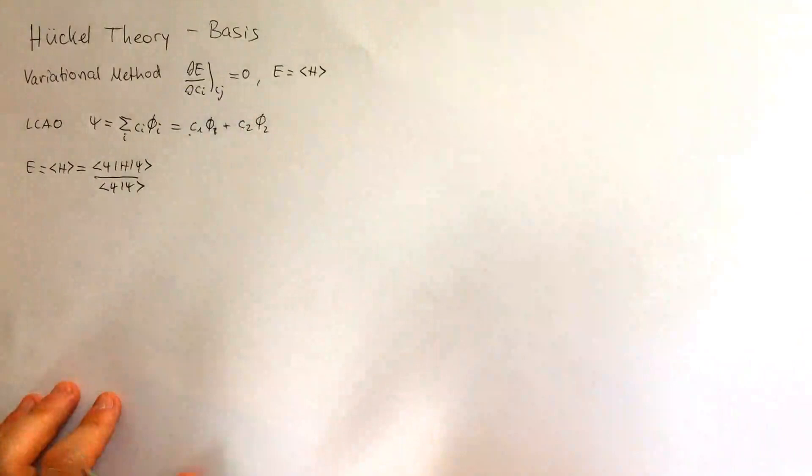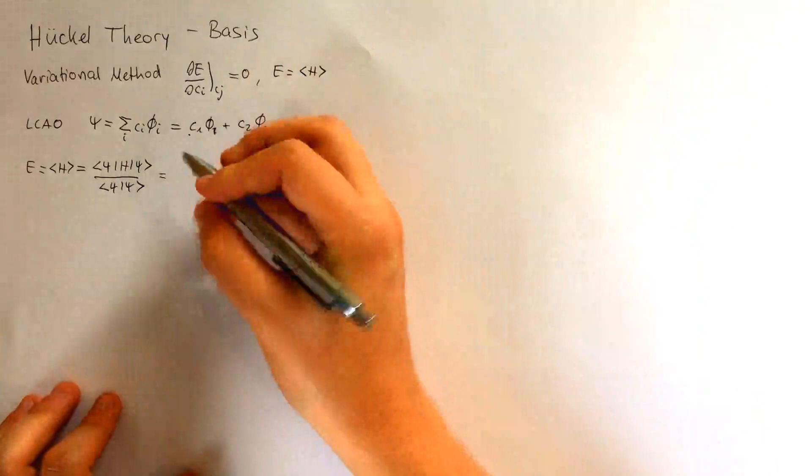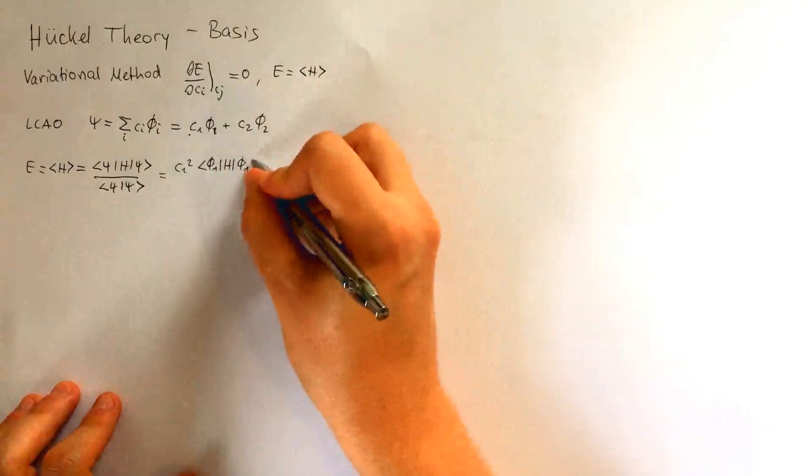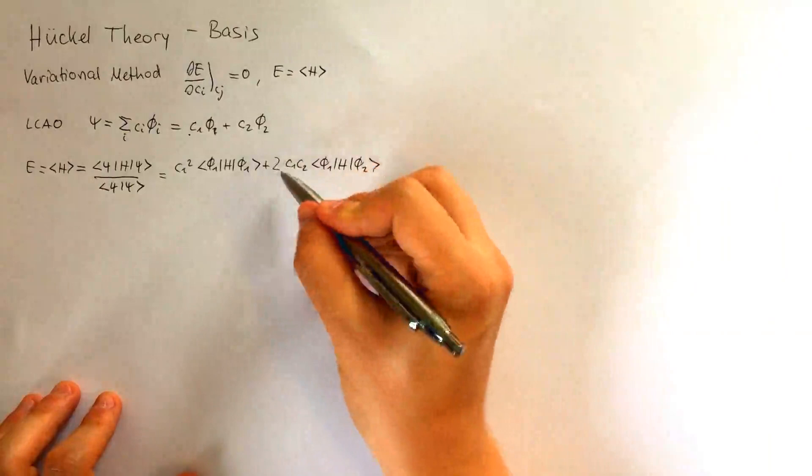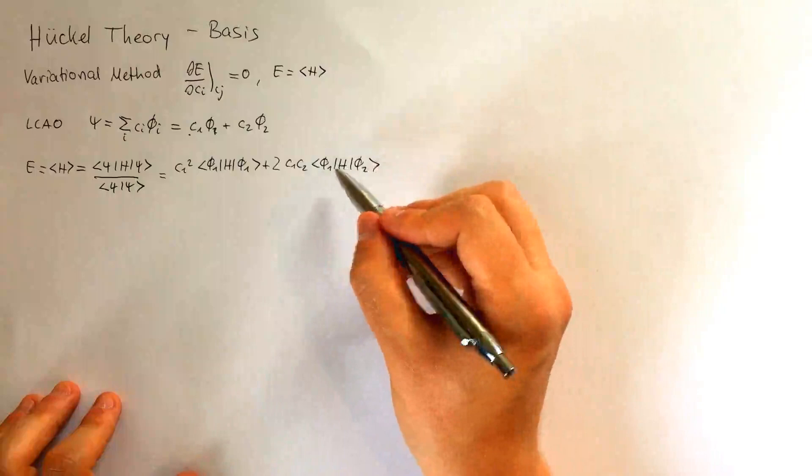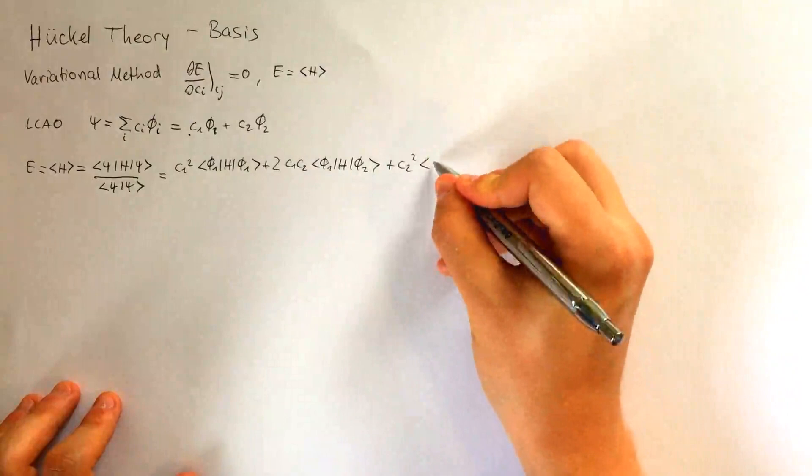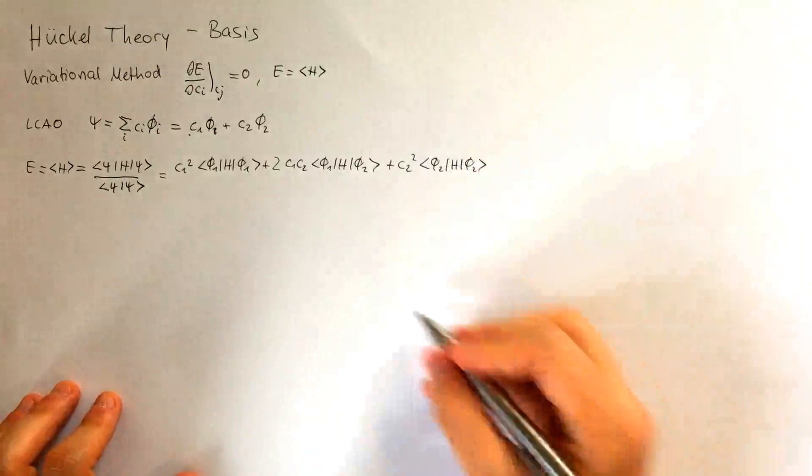If we put this into our expectation value expression now, we get C1 squared phi 1 H phi 1 plus C1 C2 phi 1 H phi 2, and now I'll write a 2 here because we also have the opposite term where it's phi 2 H phi 1, but they're identical, so I can just write a 2 here plus C2 squared.